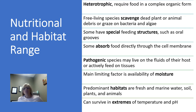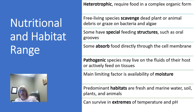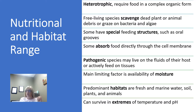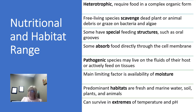The protozoa we study are usually going to be heterotrophs, getting their food from different complex organic sources. They're free-living scavengers that feed off dead plants or animal debris, or graze on bacteria or algae. They may have special feeding structures like an oral groove, and can absorb food directly through the cell membrane. Many pathogenic species live in the fluid areas of their host and actively feed on tissues. The main limiting factor for them is moisture availability. Their predominant habitats are fresh and marine water, soil, plants, and animals, but they can survive in extreme temperatures and extremes of pH.